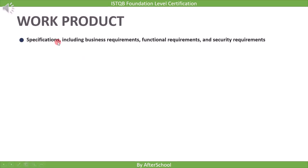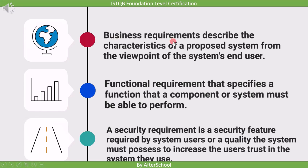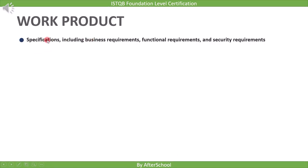The first work product is specifications, including business requirements, functional requirements, and security requirements. Business requirements describe the characteristics of a proposed system from the viewpoint of the system's end user — it is a high-level requirement from the user's point of view. Functional requirements specify a function that a component or system must be able to perform — a low-level requirement for the technical team to implement.